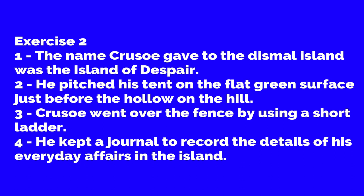Third: How did Crusoe go over the fence? Answer: Crusoe went over the fence by using a short ladder. Fourth: Why did he keep a journal? Answer: He kept a journal to record the details of his everyday affairs on the island.